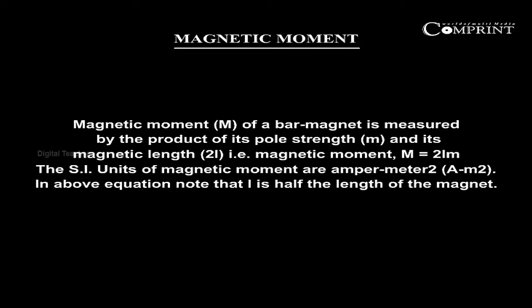Magnetic moment. The magnetic moment M of a bar magnet is measured by the product of its pole strength m and its magnetic length 2L. Magnetic moment, capital M, is equal to 2L into small m.